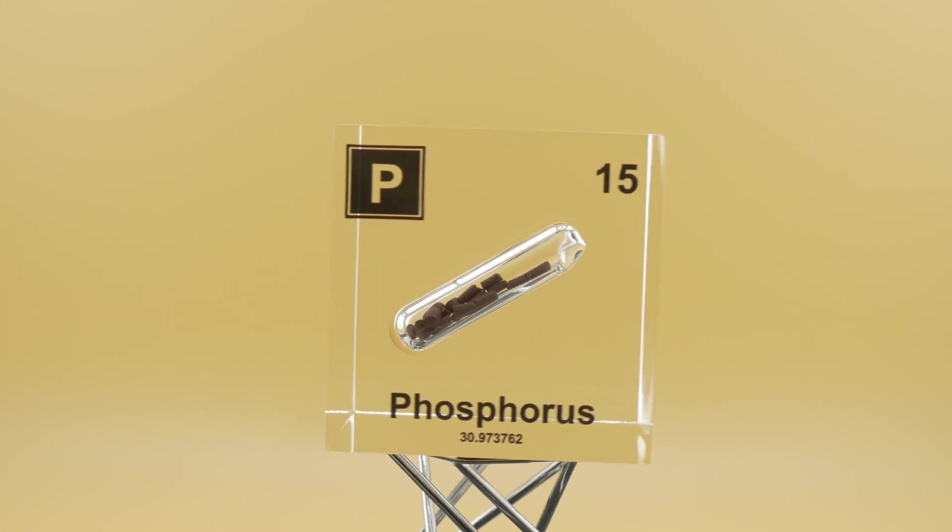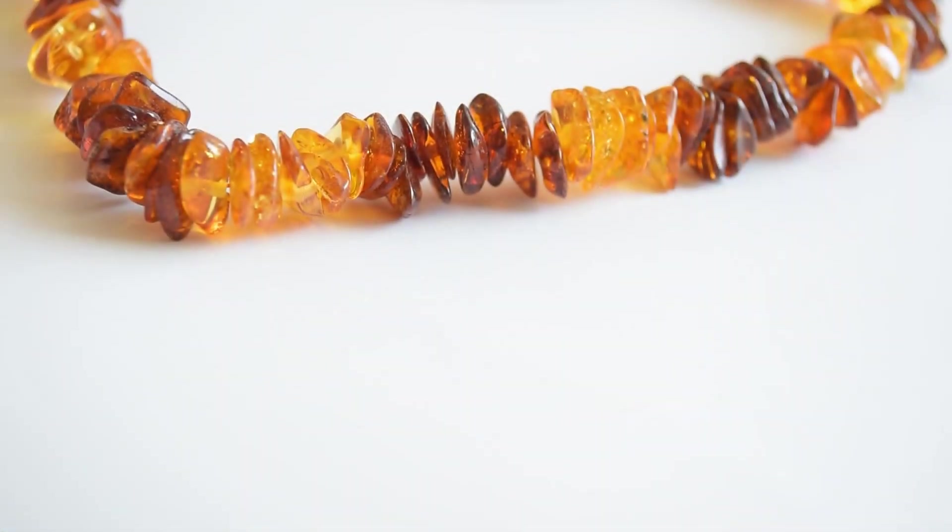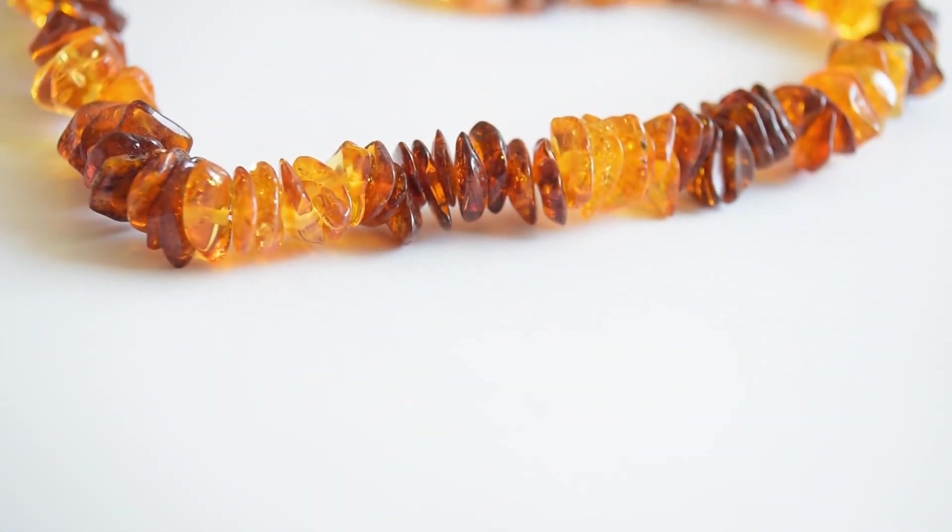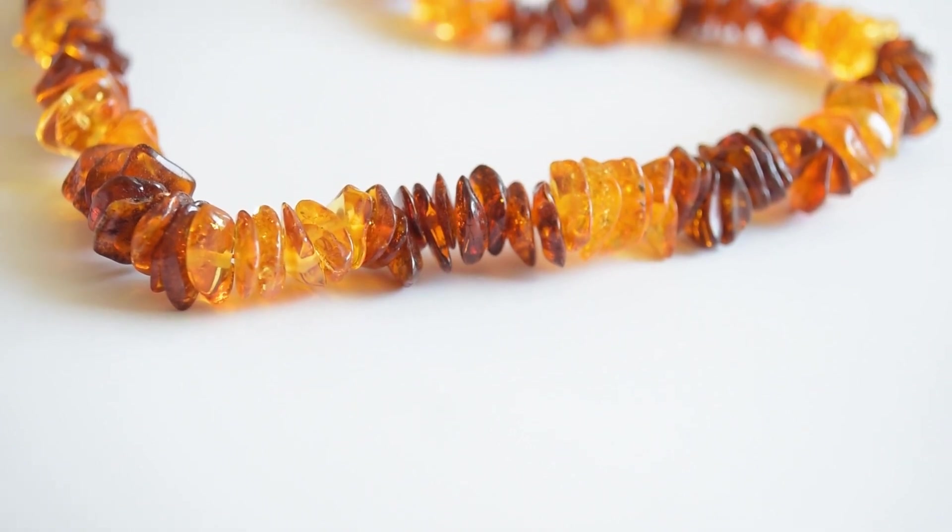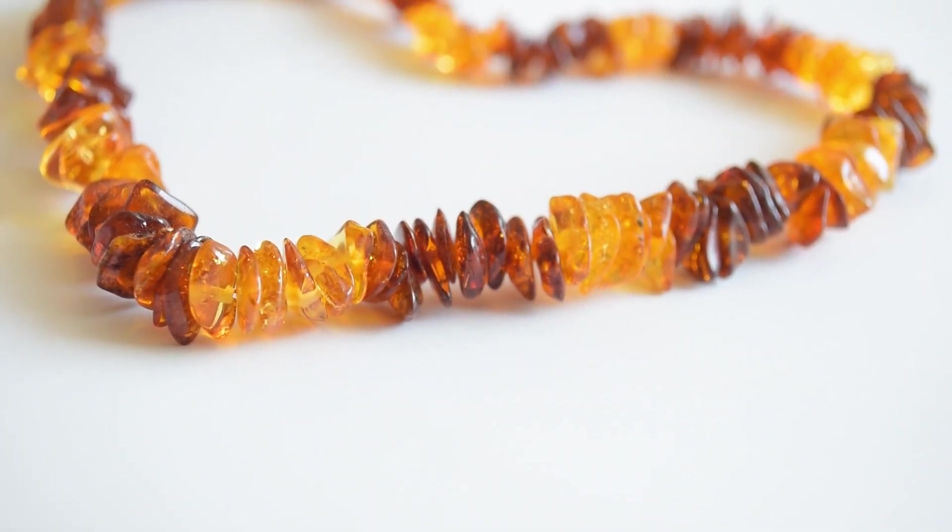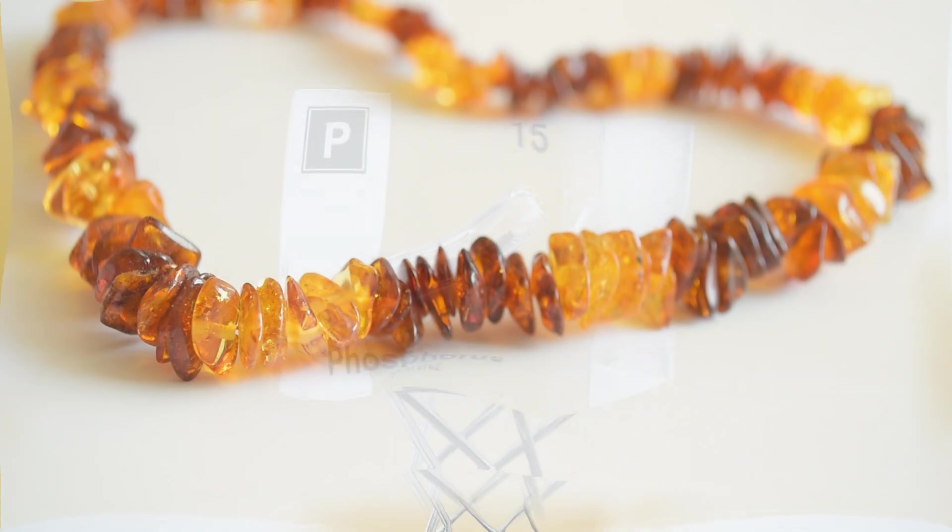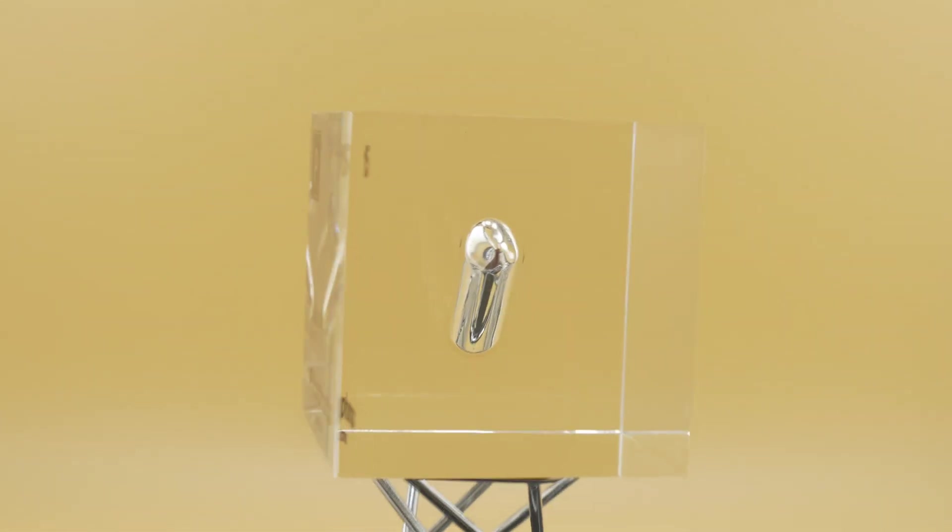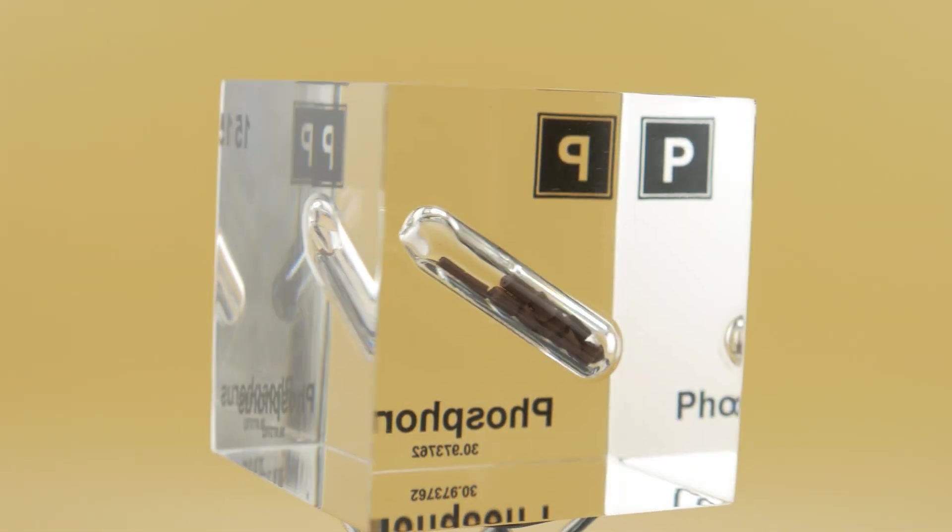And burning at temperatures up to 1300 degrees. This characteristic makes it particularly hazardous when washed ashore. Now notably chunks of white phosphorus can resemble amber, a gemstone commonly found along the Baltic beaches. Beach goers mistake these dangerous pieces for amber, having suffered severe burns upon handling them.